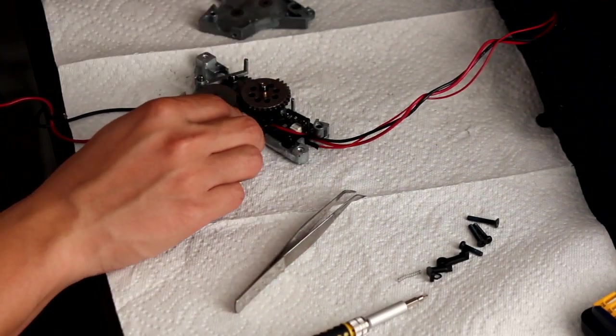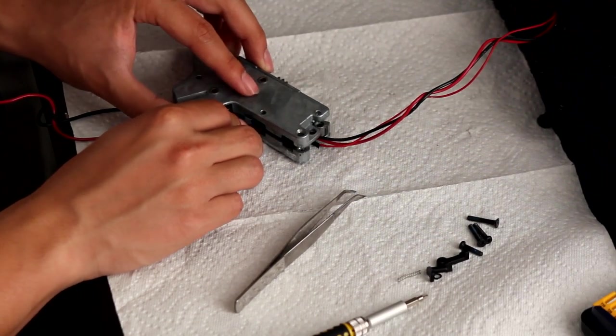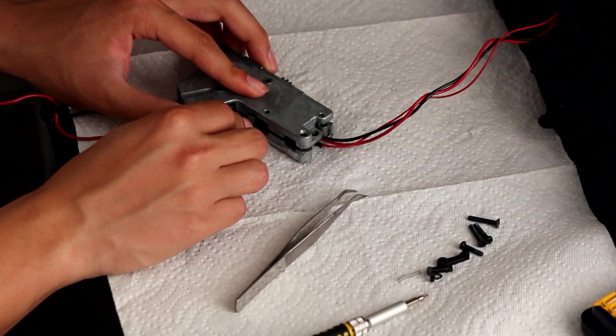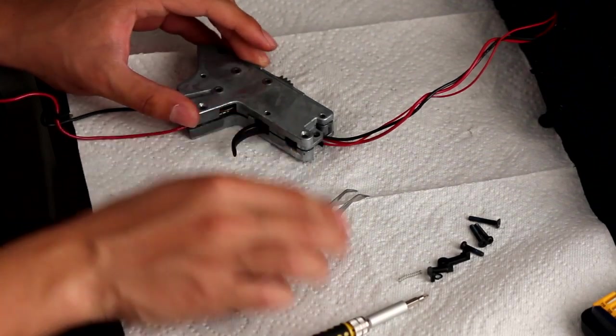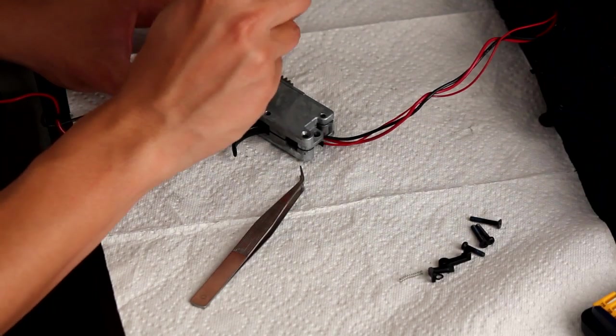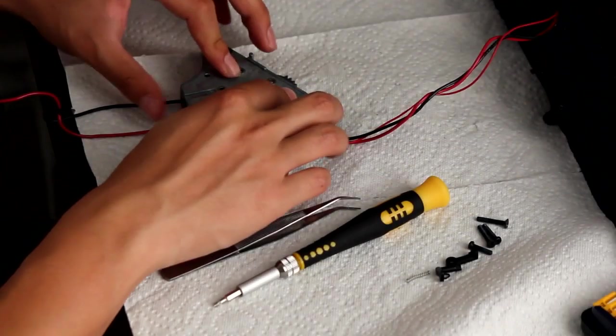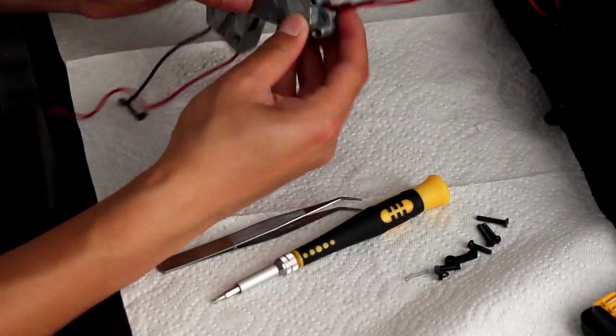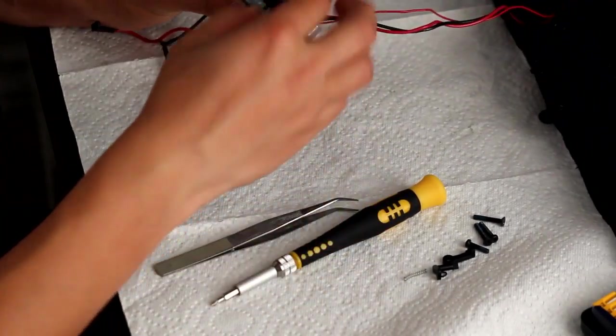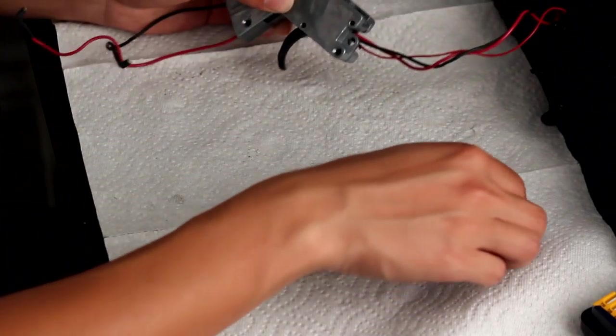And then, now that everything is in place, you're going to go ahead and close it. Make sure you use a screwdriver and make sure that all your gears line up to the holes. Just kind of wiggle things around. There we go. Alright. And then, go ahead and screw everything back together.